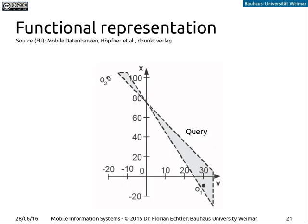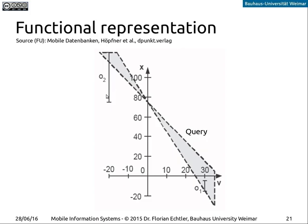Dealing with uncertainty in the functional representation simply means that objects turn into lines, representing the range of accuracy. For object one that range is very small and for object two it's quite high. We get the same result: object one is contained entirely within the query so it always matches, and object two only overlaps the query to a very small part, making it very unlikely to match. So these are two different representations of moving objects that allow you to put a spatial index over the database to enable efficient searches and lookups.